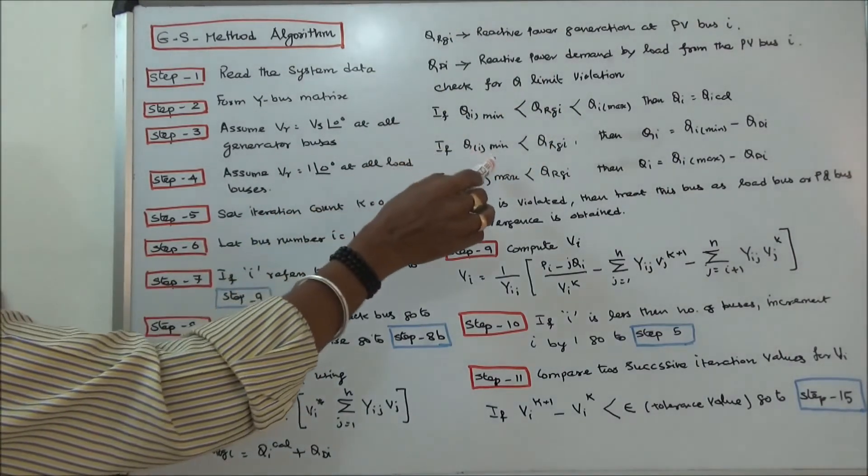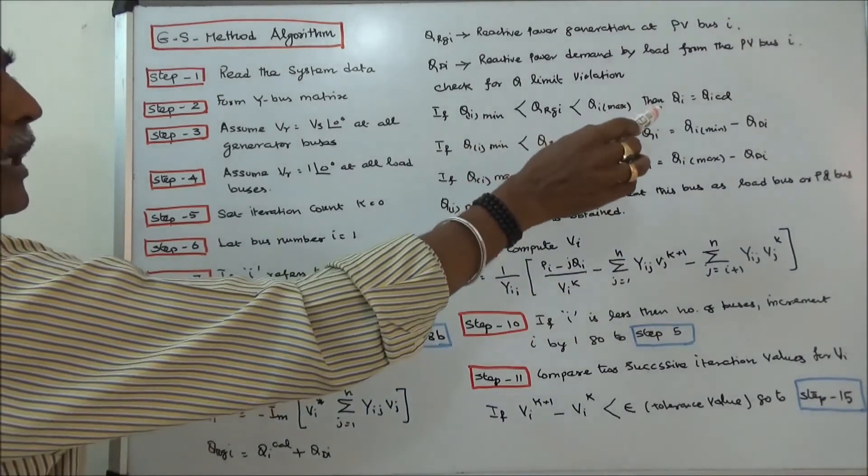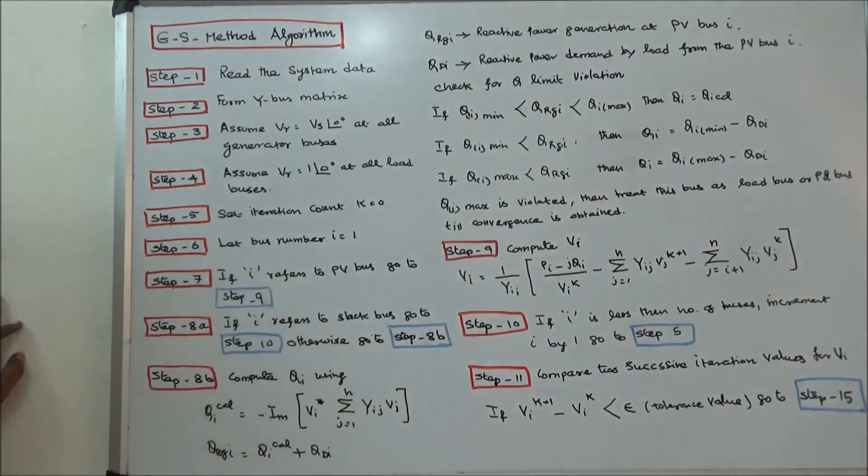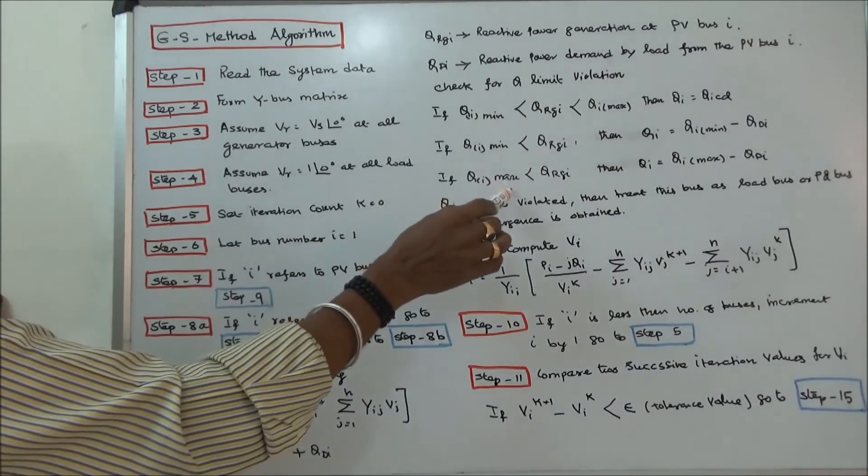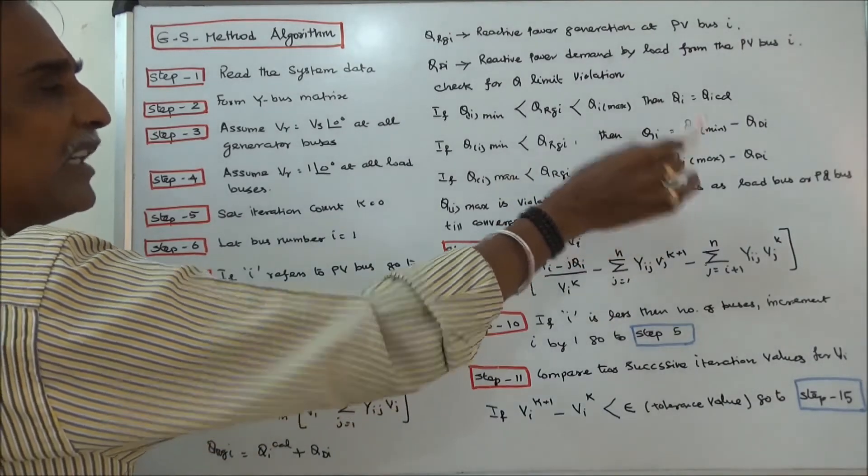If QI minimum is less than QRGI, then QI is equal to QI minimum minus QDI. If QI maximum is less than QRGI, then QI is equal to QI maximum minus QDI.